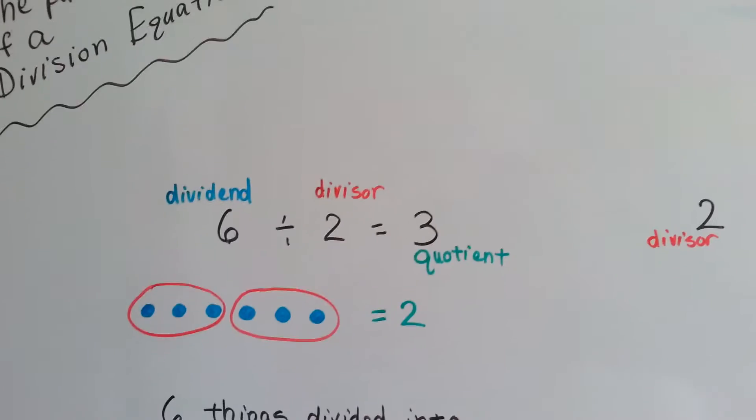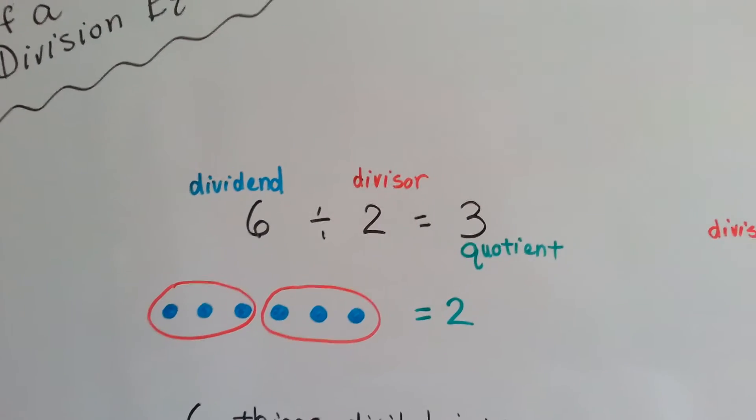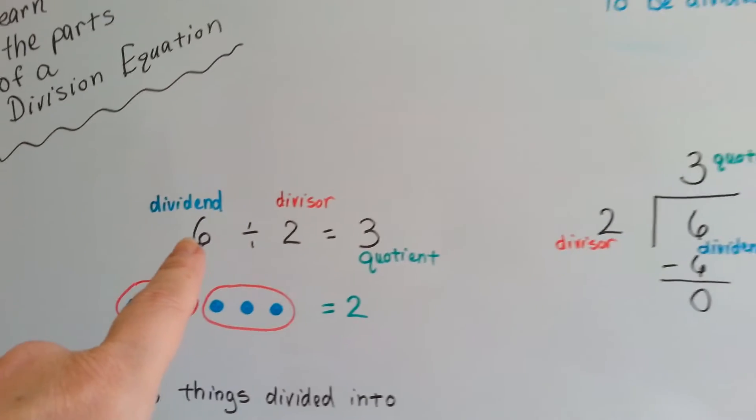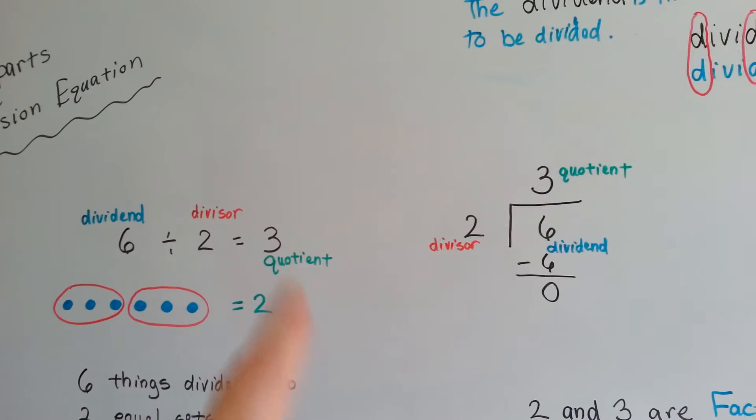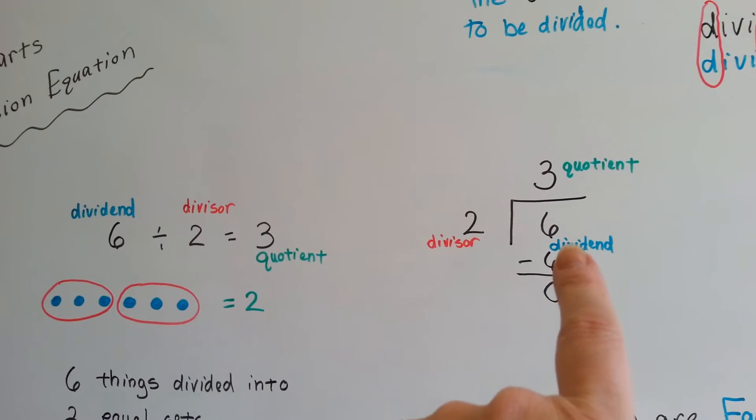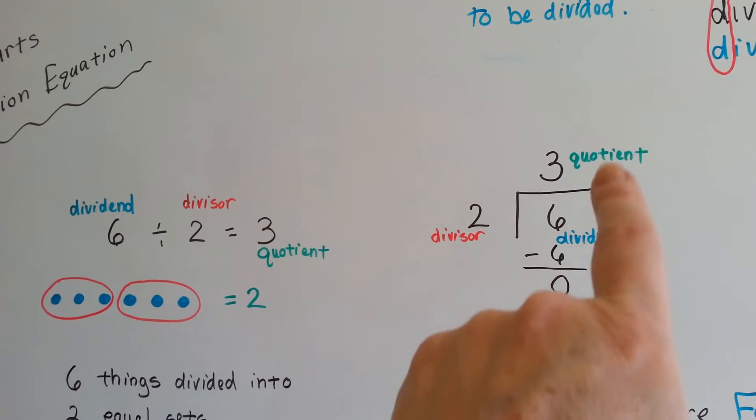Division equations are split up into three parts. There's a dividend, a divisor, and a quotient.